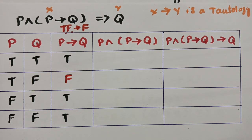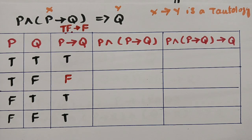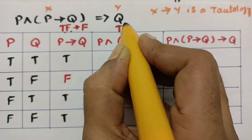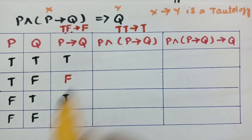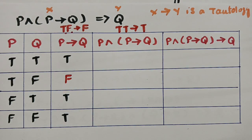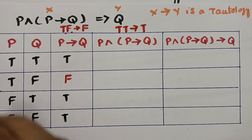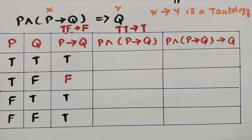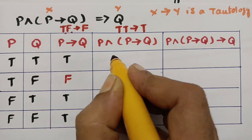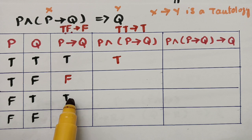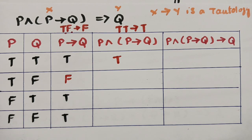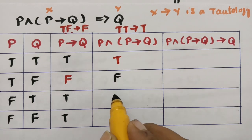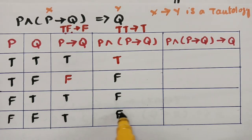For the and-statement (conjunction): if there are two trues, immediately write one true. Checking p and (p→q): there are two trues, so write true. There are no other two-true pairs, so the rest are all false.